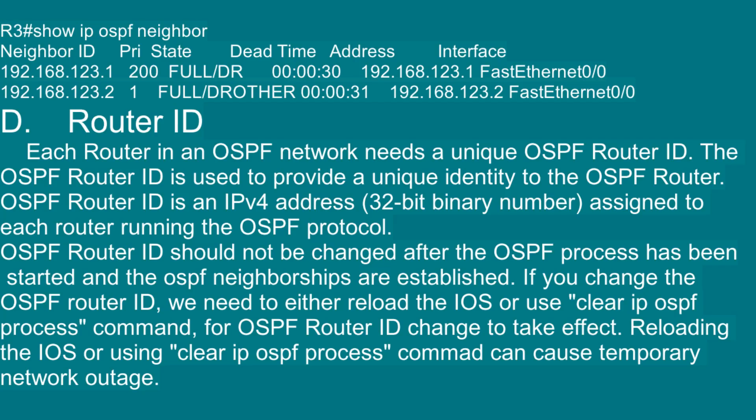D — Router ID: Each router in an OSPF network needs a unique OSPF router ID, which provides a unique identity to the OSPF router. The OSPF router ID is an IPv4 address — a 32-bit binary number — assigned to each router running the OSPF protocol. The OSPF router ID should not be changed after the OSPF process has been started and neighborships are established. If you do change it, you need to either reload the IOS or use the CLEAR IP OSPF process command for the change to take effect, as doing so can cause a temporary network outage.